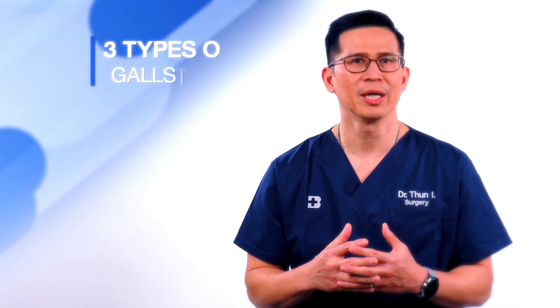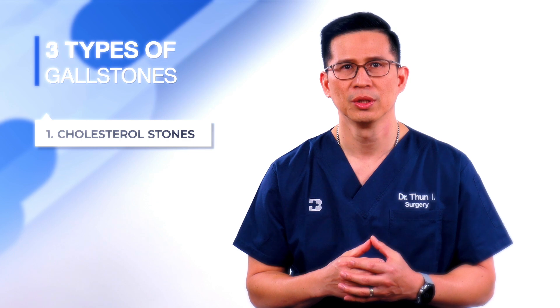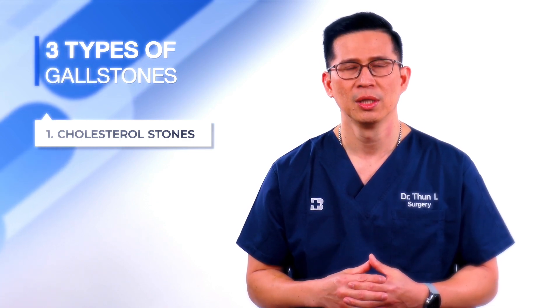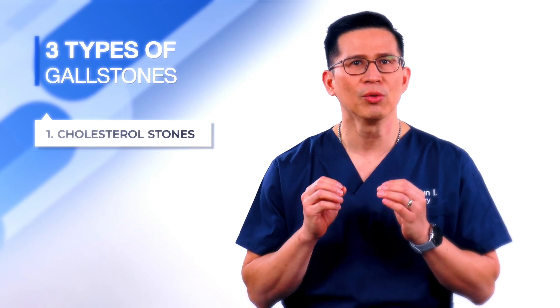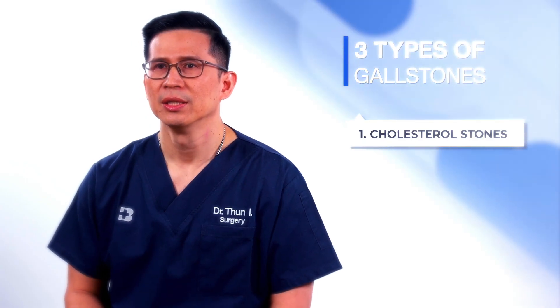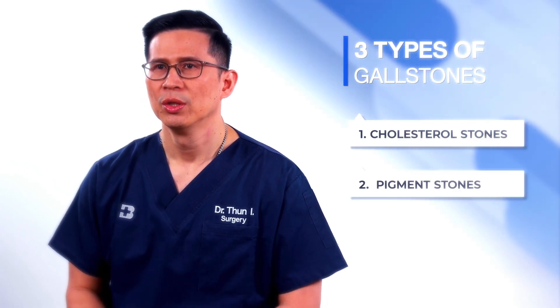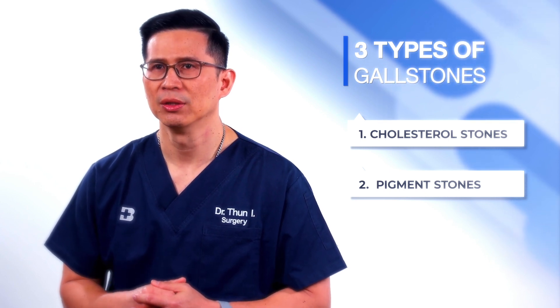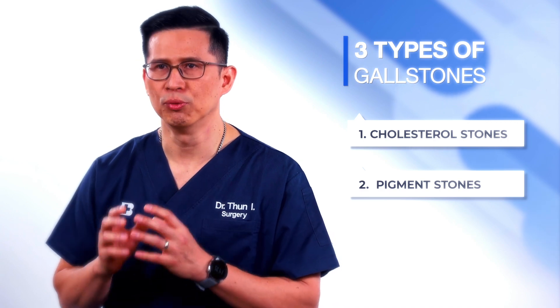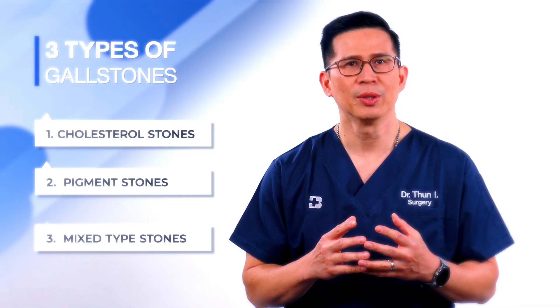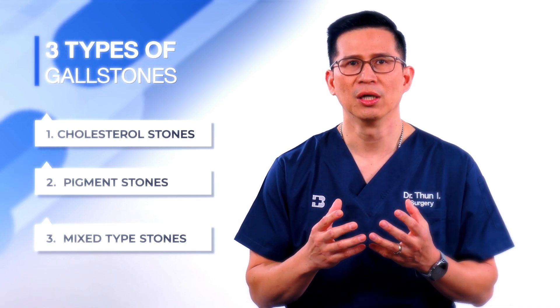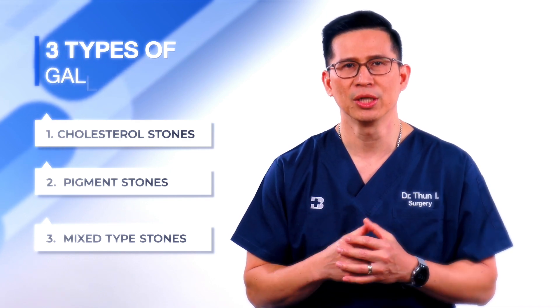Commonly, there are three types of gallstones. The first one is the cholesterol stone, which is caused by undissolved cholesterol, presented with a yellow color. The second one is the pigmented stone, which is caused by excess bilirubin in the bile, presented with black or brown stones. And the last one is a mixed type stone, which can have components of both cholesterol and bilirubin.